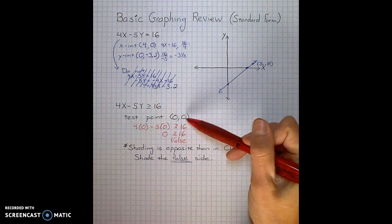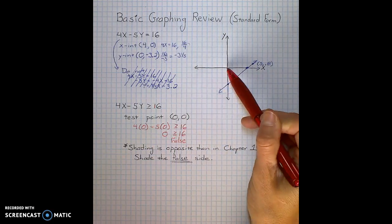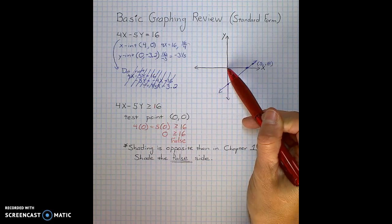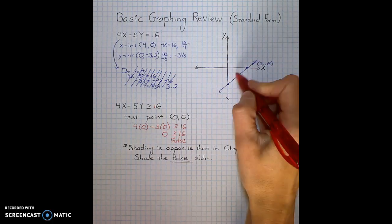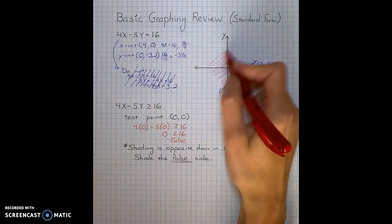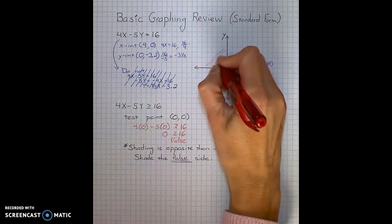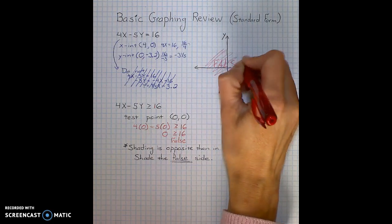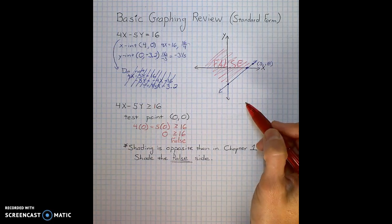We had tested 0, 0, which is that point, and it came out false. That means I am going to shade to the top left. This is the false section. I shade the false section when I am in chapter 3.